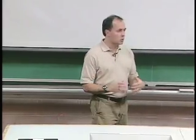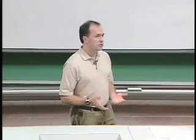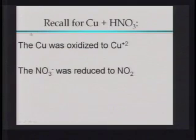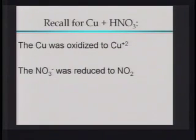I don't want you to go away thinking that these processes can only go in one direction. When I threw copper into nitric acid, the copper got oxidized to Cu²⁺. But depending on what you're reacting it with — in this case nitrate ion — it is, in fact, possible to reduce the copper ion back to copper metal.